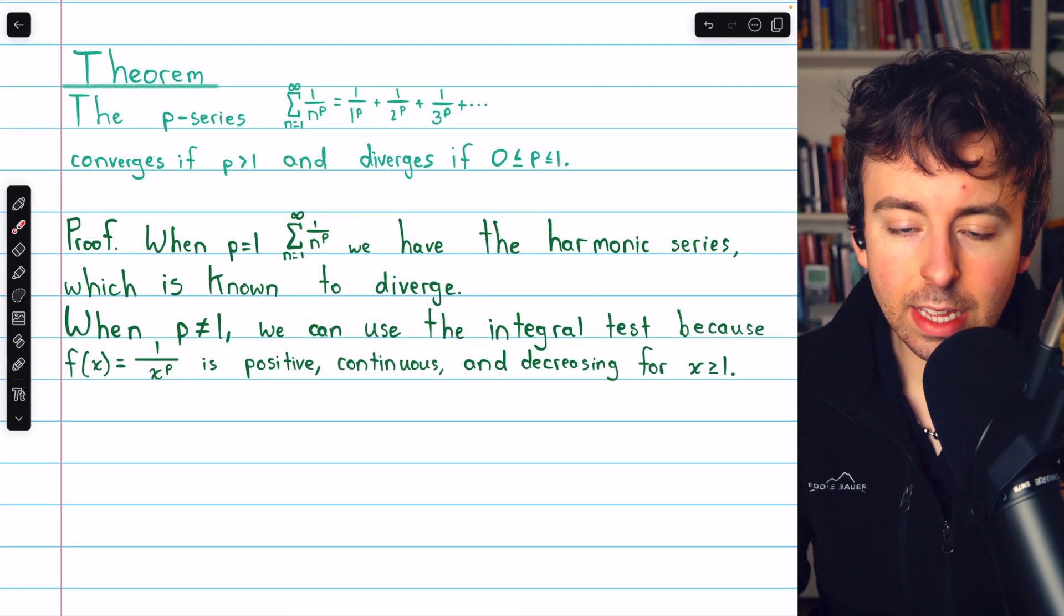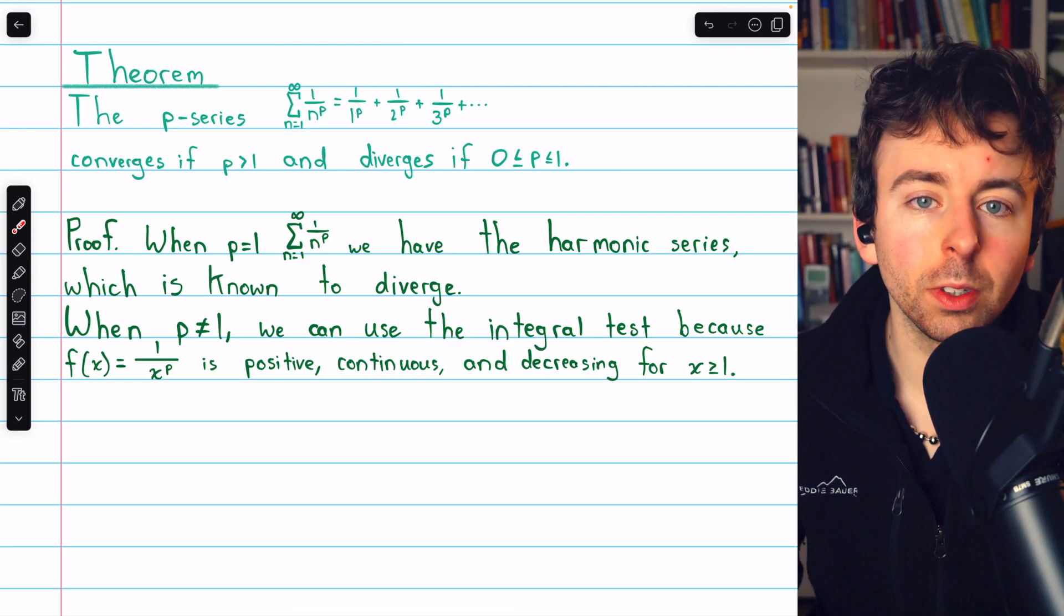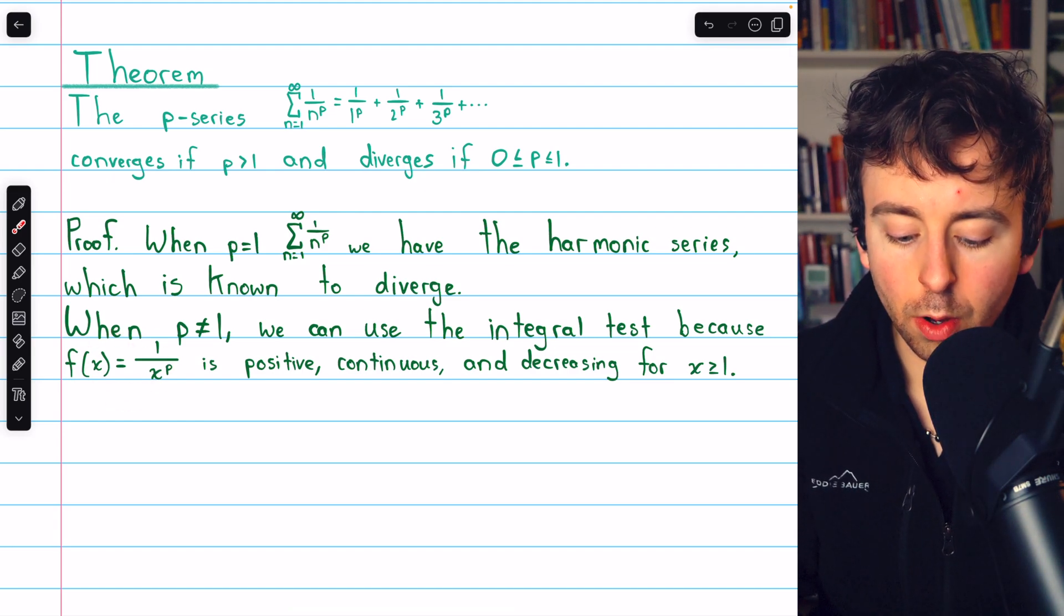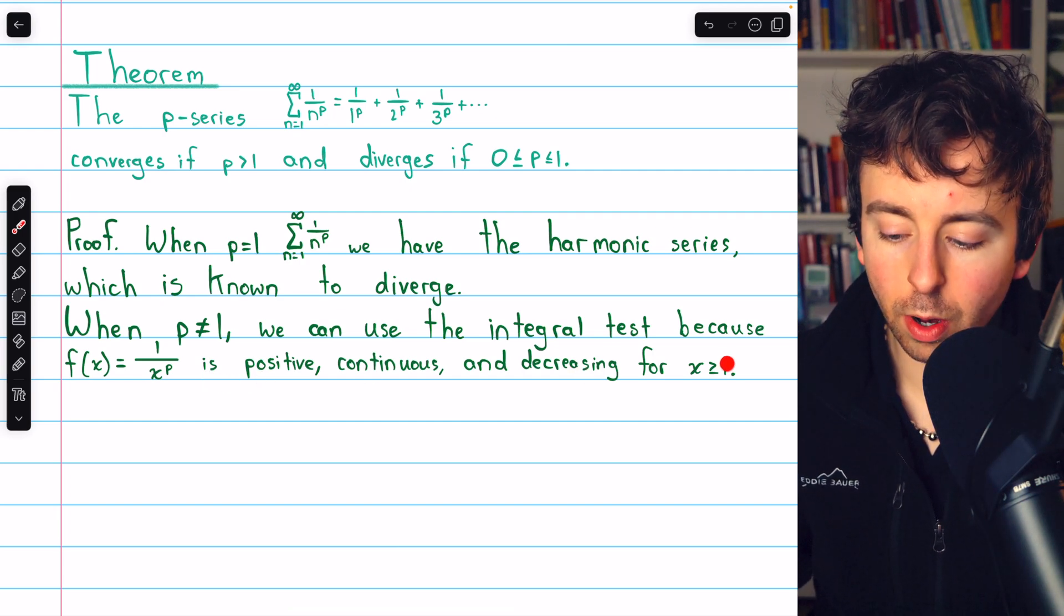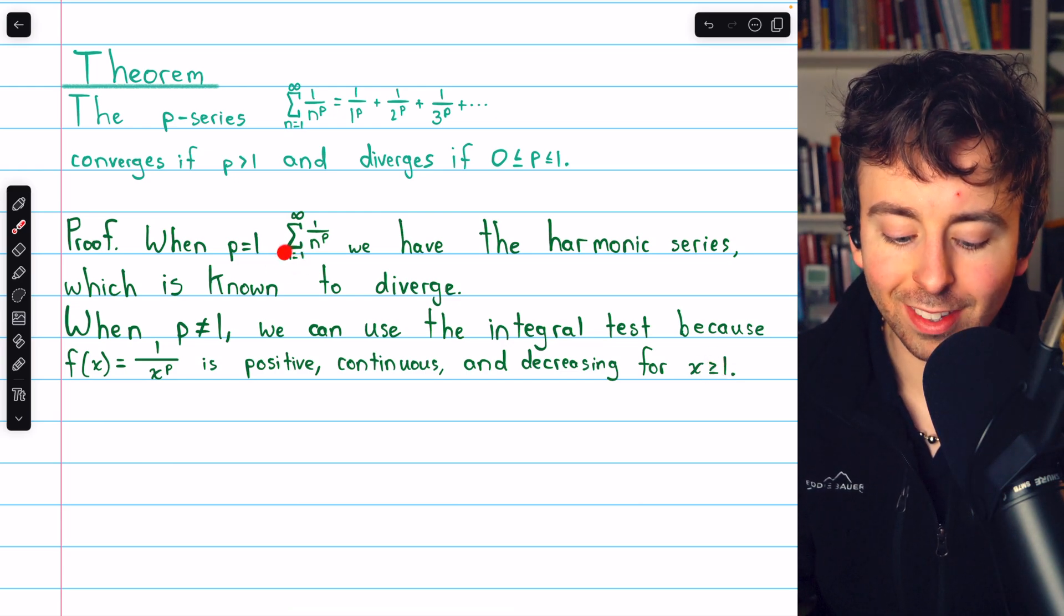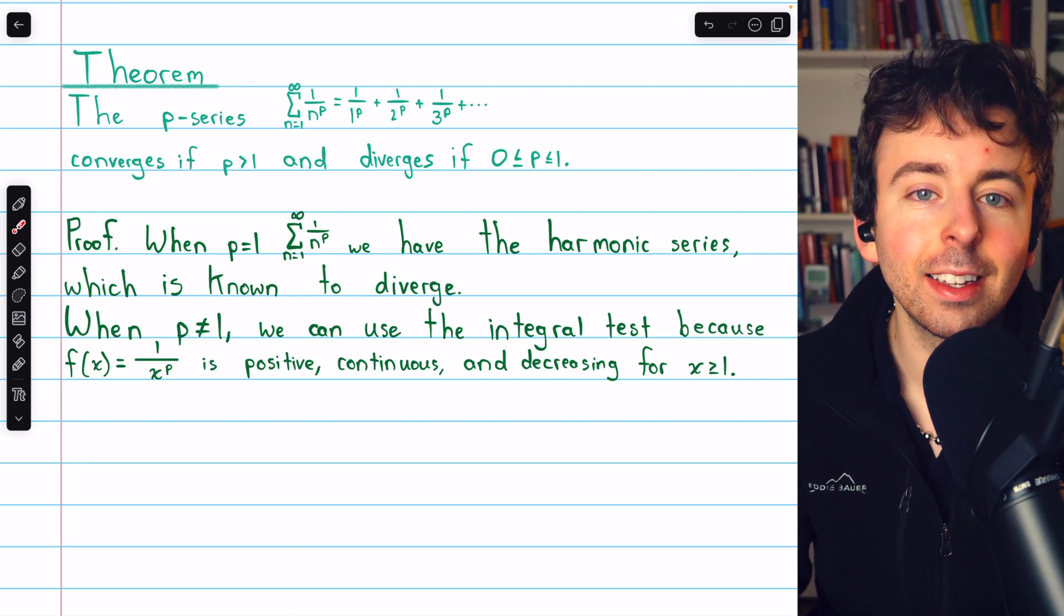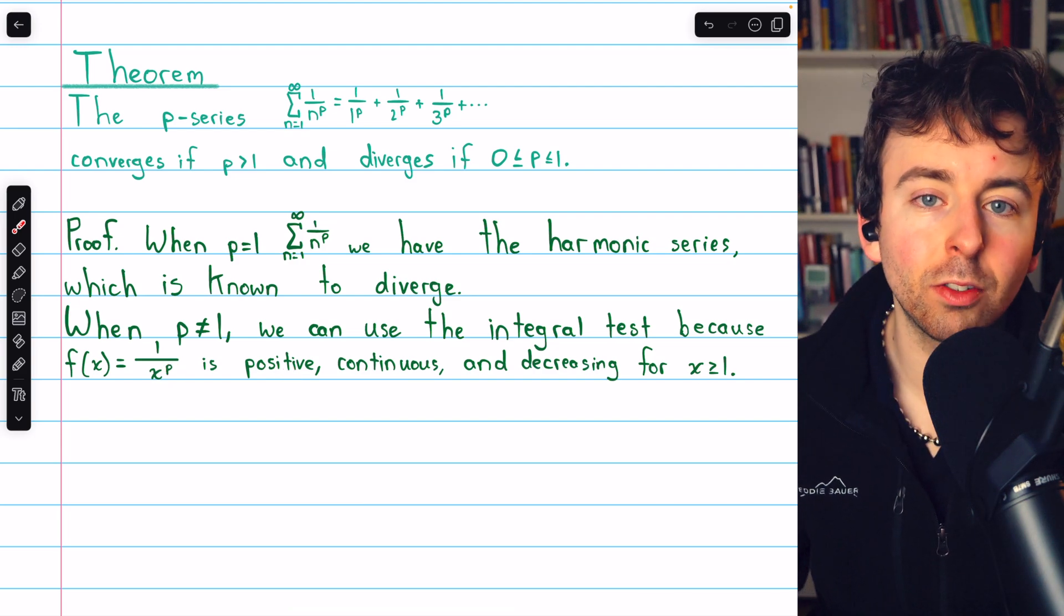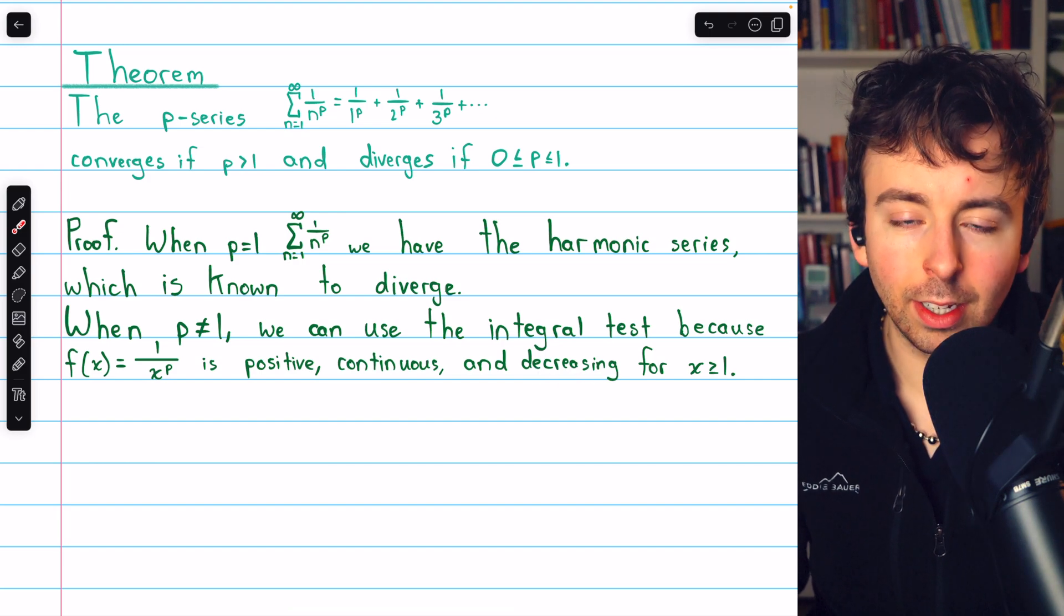For cases when p is not equal to 1, we'll go ahead and use the integral test. We know that the integral test applies because the corresponding function is f(x) equals 1 over x to the p, and this is positive, continuous, and decreasing for x at least 1. x is at least 1, of course, because the p-series starts at n equals 1. Certainly it's positive because x is positive and p is just a power. It's continuous because we're not plugging in 0, and it's decreasing as well.